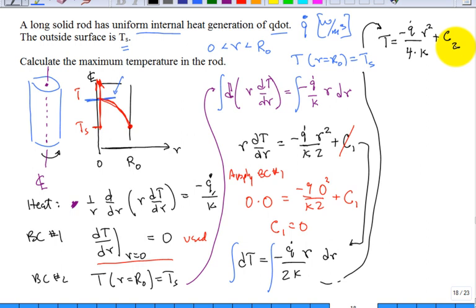I think I did that right. So now we apply boundary condition number 1. No, boundary condition number 2. Apply boundary condition number 2. And what do we pick up? We pick up that Ts is equal to negative q dot divided by 4k at the cap r naught squared plus c2.